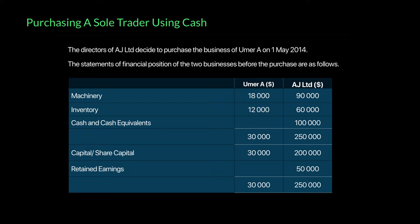Please understand this again: Umar is the seller, AJ is the buyer. We were previously the seller — now we are the buyer, so all our attention should be towards AJ Limited. AJ Limited is buying Umar's sole trader. Umar has two assets: machinery worth 18,000 and inventory worth 12,000. These are the values placed by Umar — AJ Limited might have a different value for them. Umar's total assets are worth 30,000 in this example.